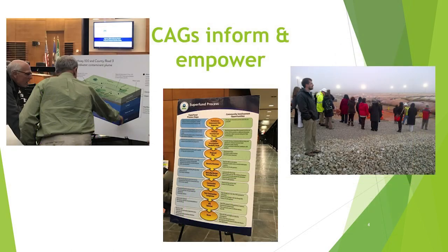By serving as the public forum for community members, a CAG allows its members to learn more technical details about the cleanup steps and empowers them to be knowledgeable partners with EPA in the cleanup decision-making process. It ensures that their perspectives and voices are part of recommendations and helps EPA make better decisions.